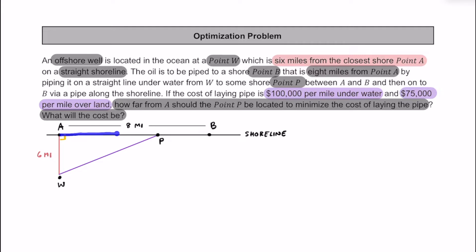The entire distance from A to B is 8 miles. We call the distance from A to P simply X, so the distance from P to B is 8 minus X, depending on where P lands. We label the length of the underwater pipeline as Y.